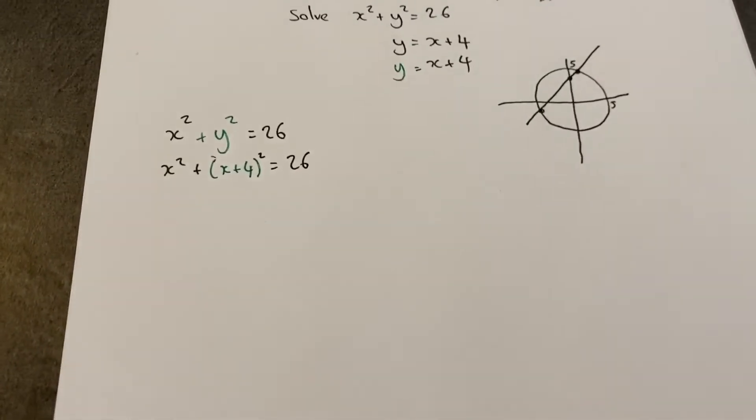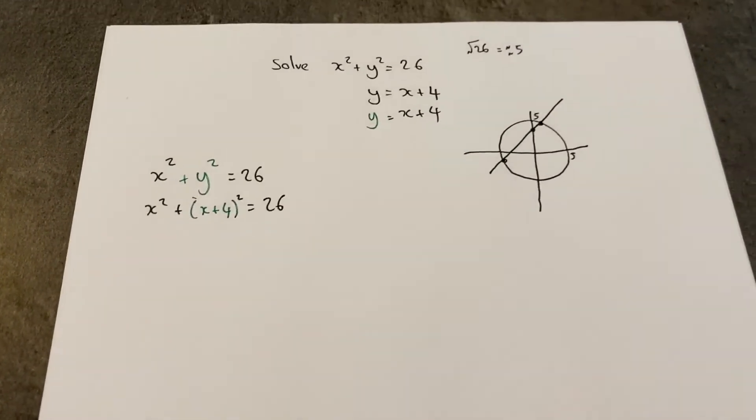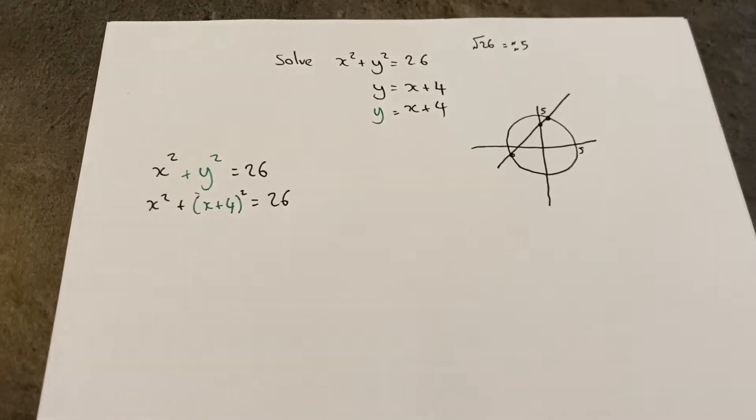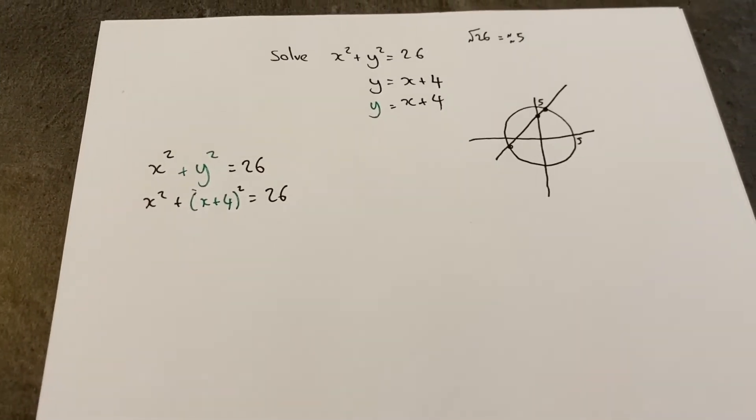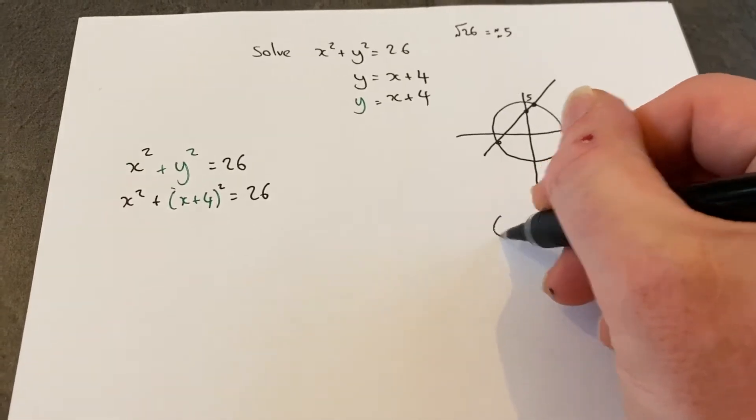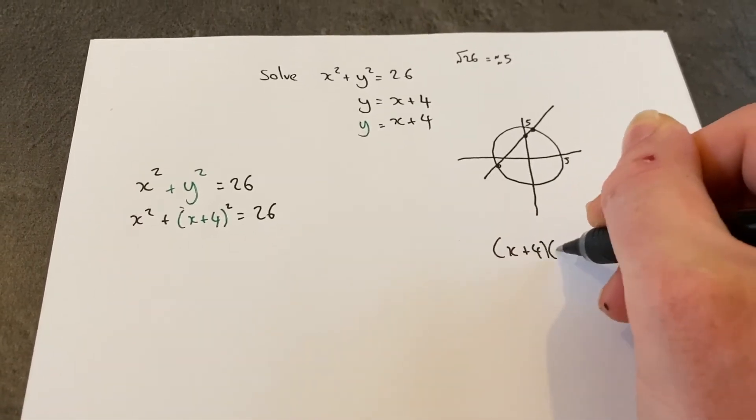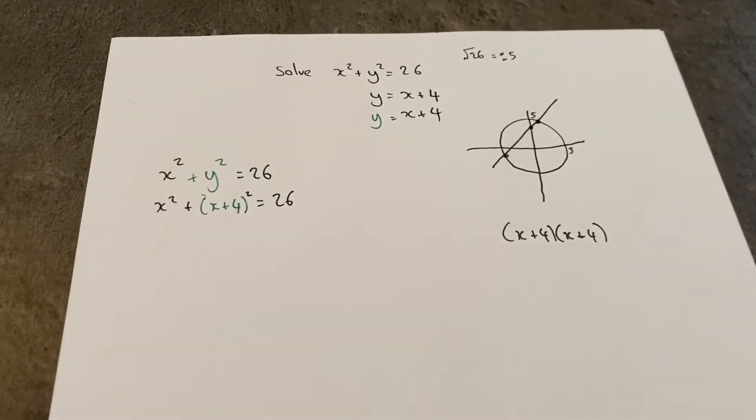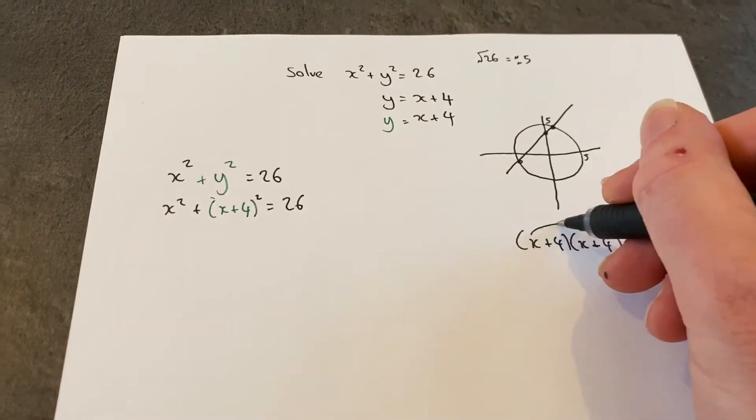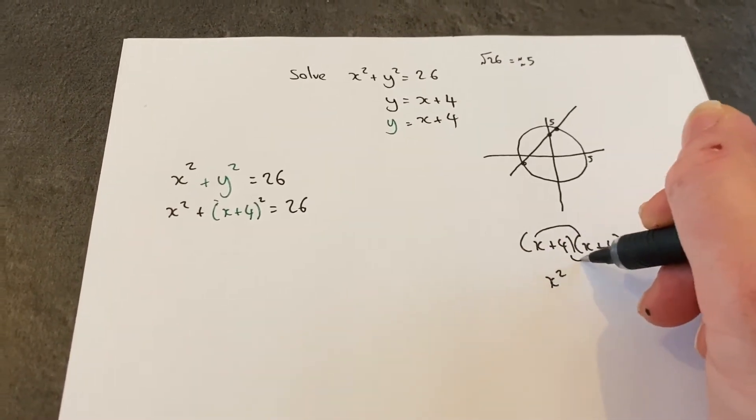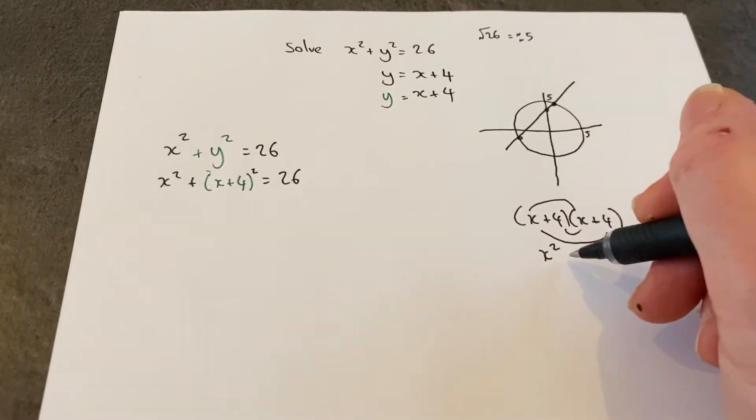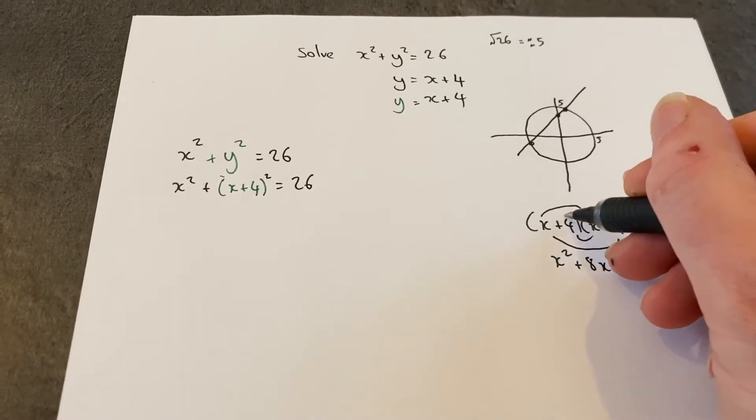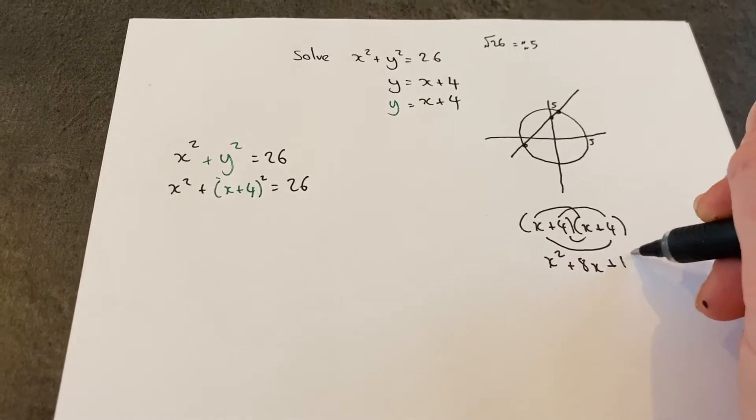The equation now is just in terms of x. To solve this, I'm going to expand the bracket x plus 4 squared. We know that squared means double brackets, which I can expand. We get an x squared term, 4x and 4x which equals 8x, and 4 times 4 is 16.